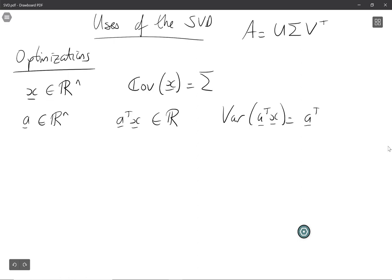...a transposed Σ a. And this is what we call a quadratic form. So we're going to be interested in finding choices of a that make this variance as large as possible or sometimes as small as possible.